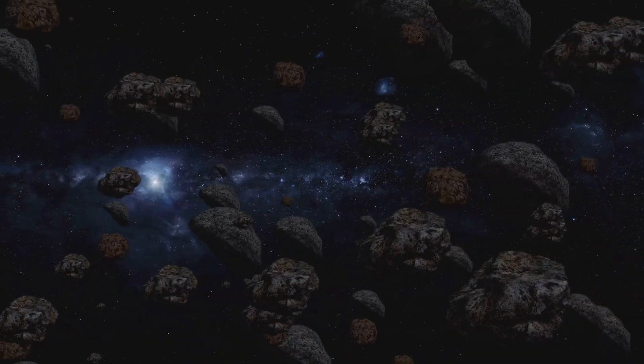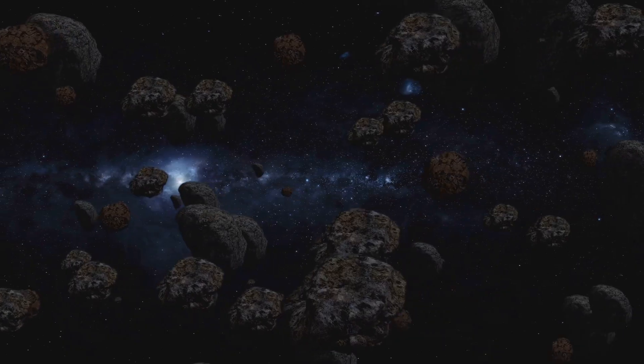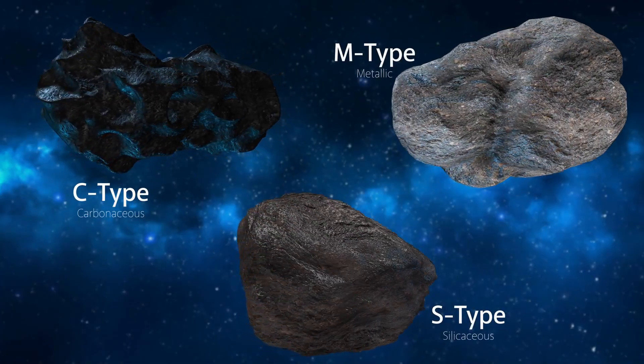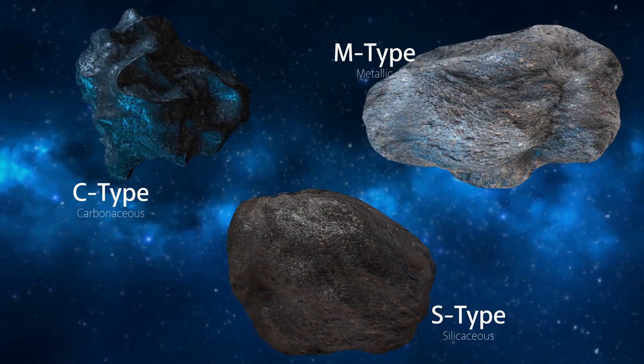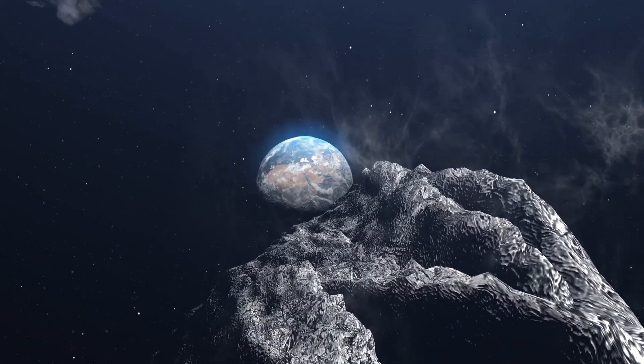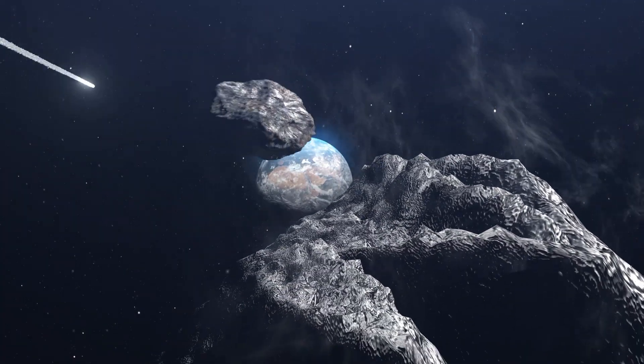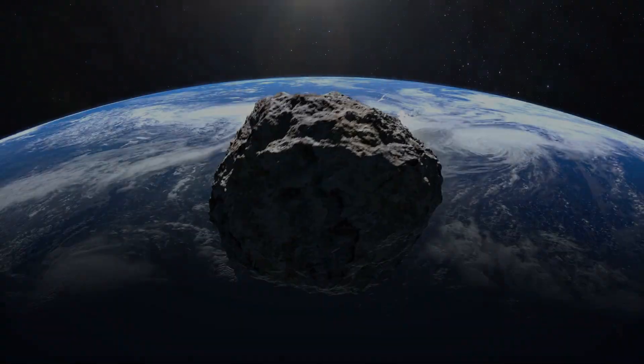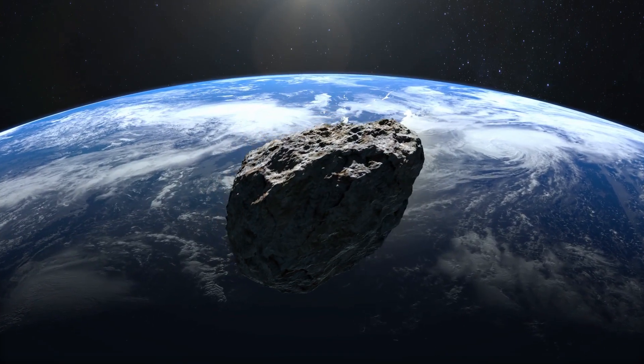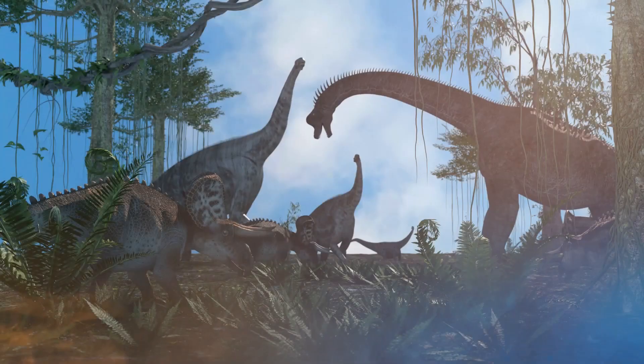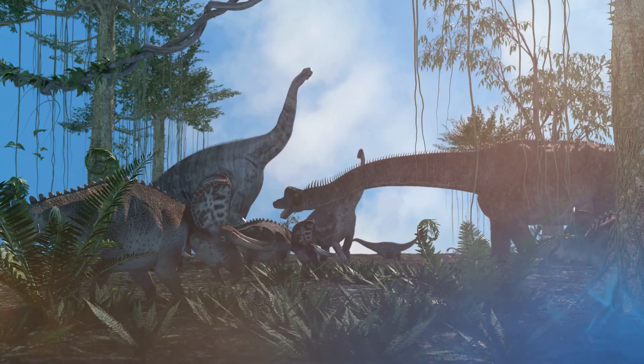Beyond these subtle shifts, our solar system is a cosmic shooting gallery. Asteroids, remnants from the early formation of our solar system, hurtle through space. And while collisions are rare on human timescales, over millions of years the probability increases. An impact from a large asteroid could have catastrophic consequences for life on Earth, potentially mirroring the event that wiped out the dinosaurs millions of years ago.